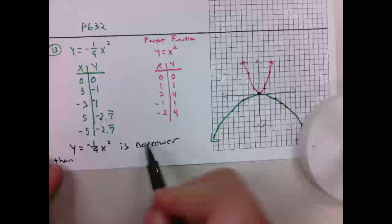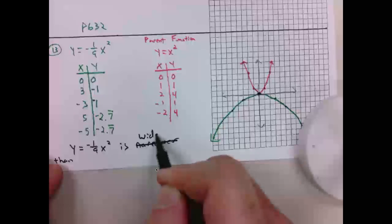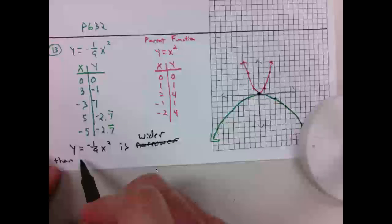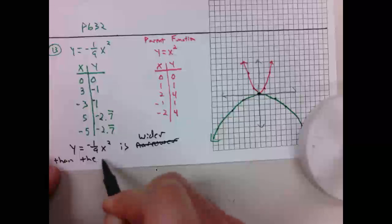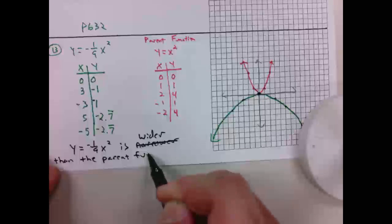Pardon me. It is wider. Negative 1/9 X squared is wider than the parent function. And it opens downward.